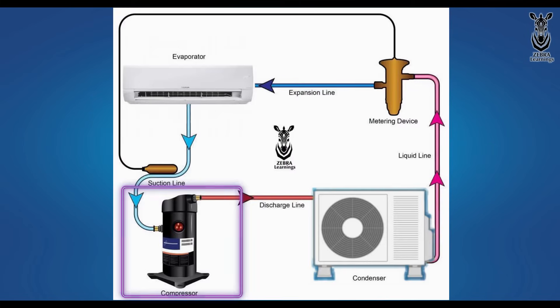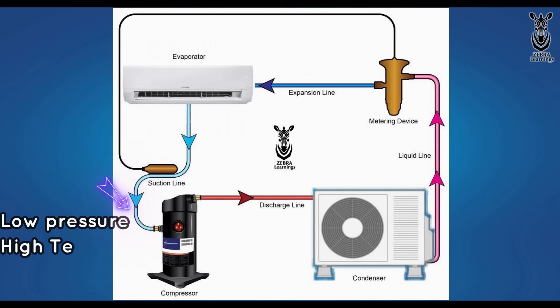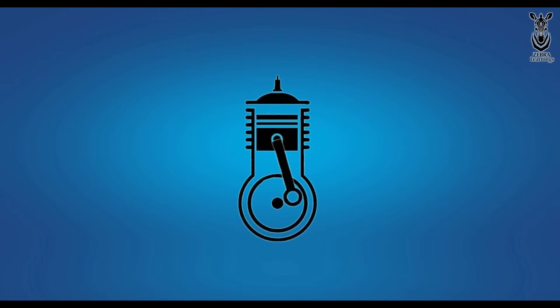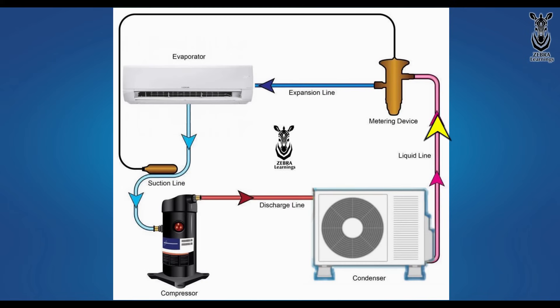Then, this refrigerant goes inside the compressor. After the refrigerant enters the compressor, the compressor compresses the refrigerant well and sends it out at high pressure. Only then, this refrigerant can travel through all the equipments.